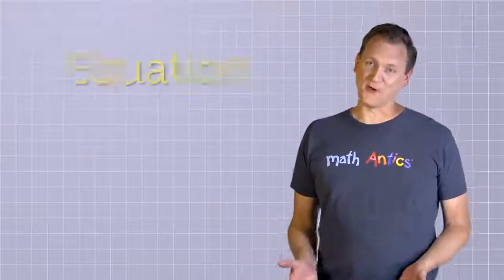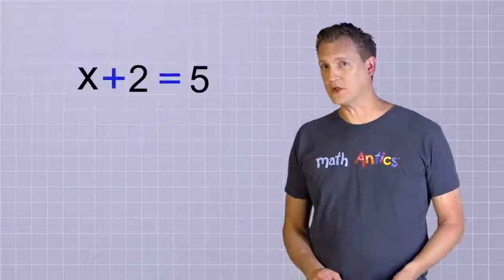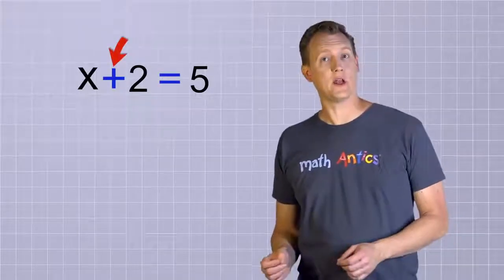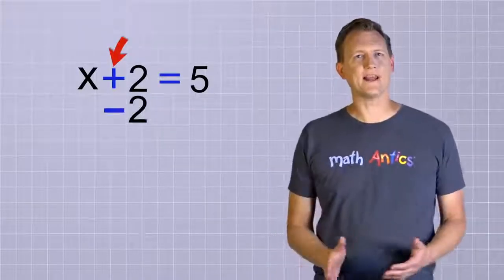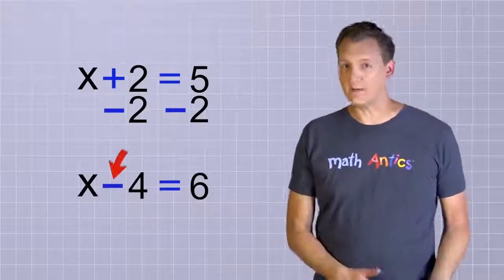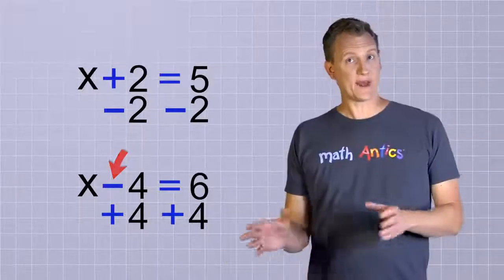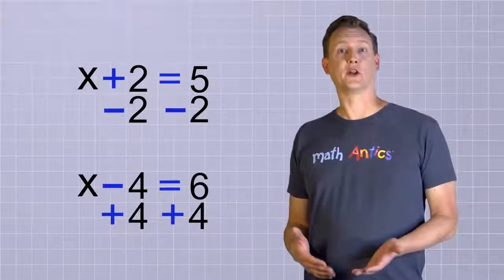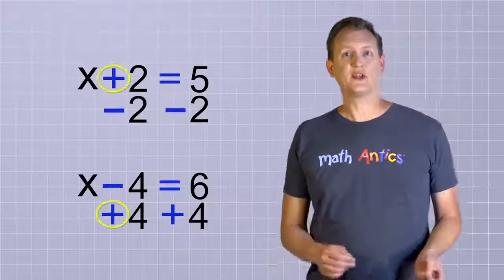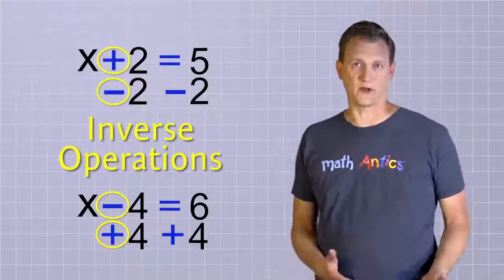It's to keep the equation in balance. Now remember from the last video, in equations where a number was being added to an unknown, we had to subtract that number from both sides. But when a number was being subtracted from the unknown, we had to add that number to both sides. And that makes sense because, as we learned in the video called What is Arithmetic, addition and subtraction are inverse operations. They undo each other.